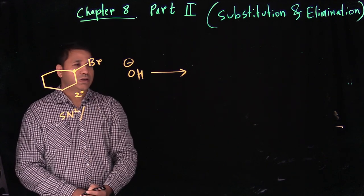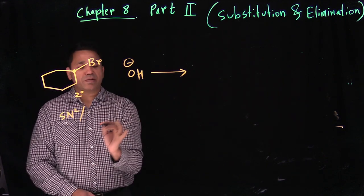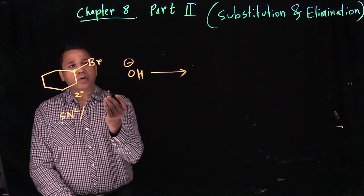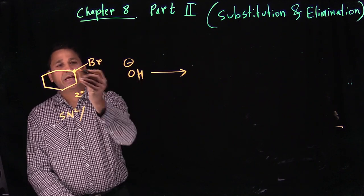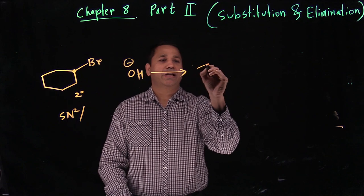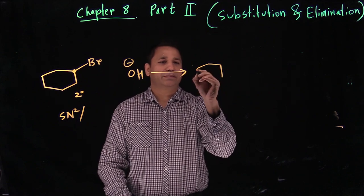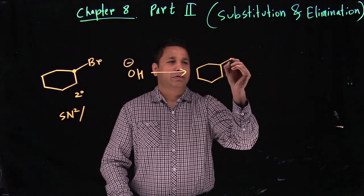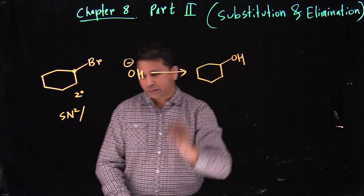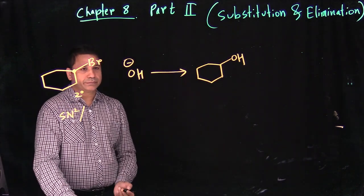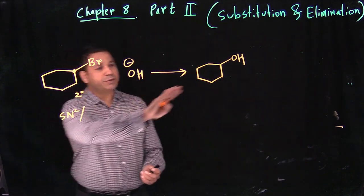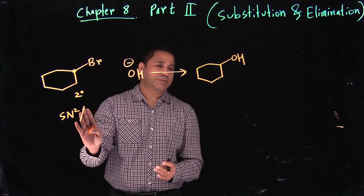This is a secondary carbon with a strong nucleophile, which means we are doing SN2. In SN2, the nucleophile attacks and the leaving group leaves at the same time. You will get your substitution product. Once you've got your substitution product, set that aside and focus on elimination.